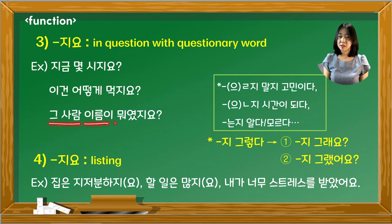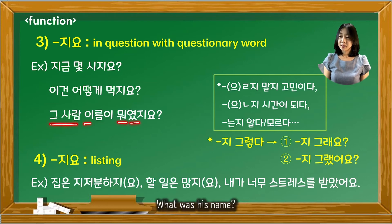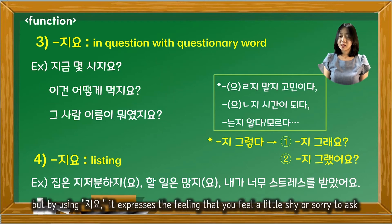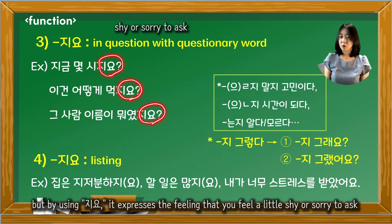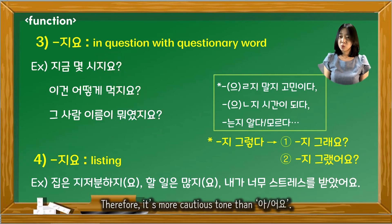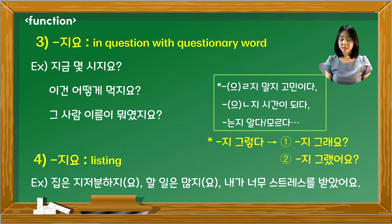그 사람 이름이 뭐였지요? — What was his name? In these sentences, using 아/어요 in place of 지요 does not change the meaning. But by using 지요, it expresses the feeling that you feel a little shy or sorry to ask about general common sense, or something you already knew but forgot. Therefore, it is a more cautious tone than 아/어요. Compare: 지금 몇 시예요? versus 지금 몇 시지요?